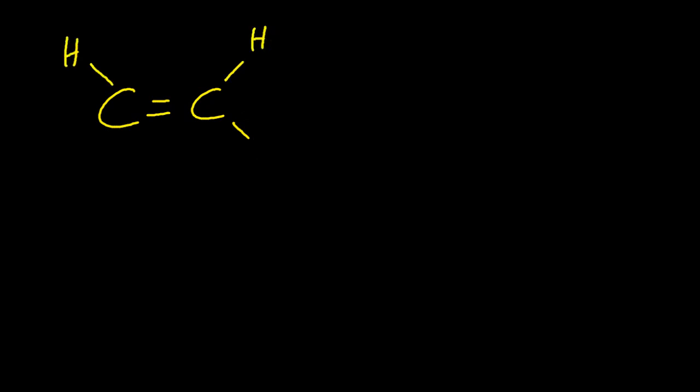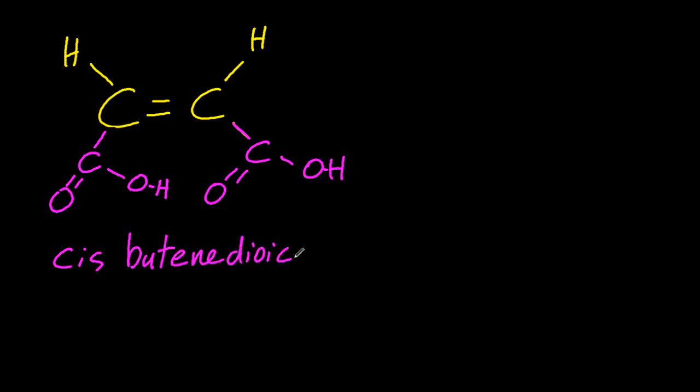The other molecule the IB specifically mentioned is this one here. Different books give this different names, but we'll call this cis-butene-dioic acid. Butene means four carbons in the longest chain. Cis means the functional groups on the same side.